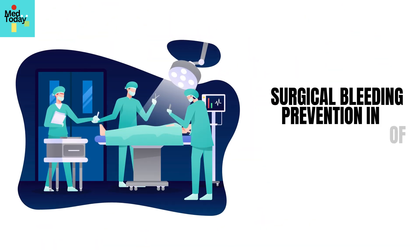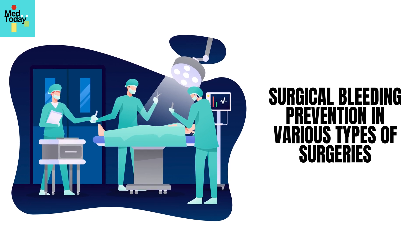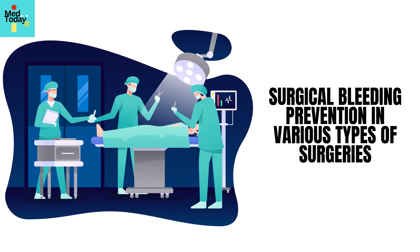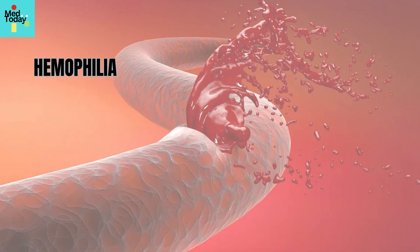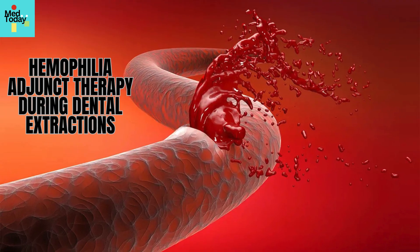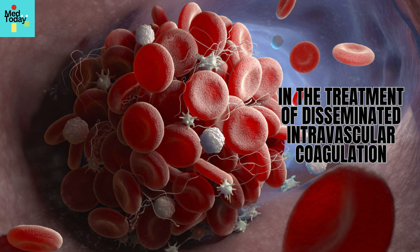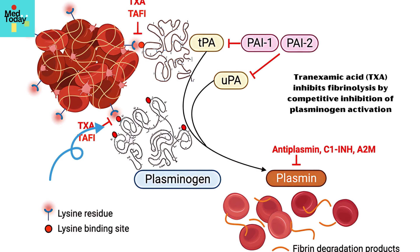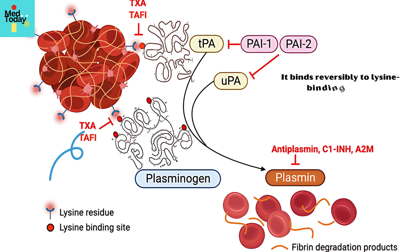Tranexamic acid is used for surgical bleeding prevention in various types of surgeries including cardiothoracic, orthopedic, obstetric, and gynecologic surgeries. It is also used in the treatment of heavy menstrual bleeding, hereditary angioedema, liver disease, hemophilia, as adjunct therapy during dental extractions, and in the treatment of disseminated intravascular coagulation.